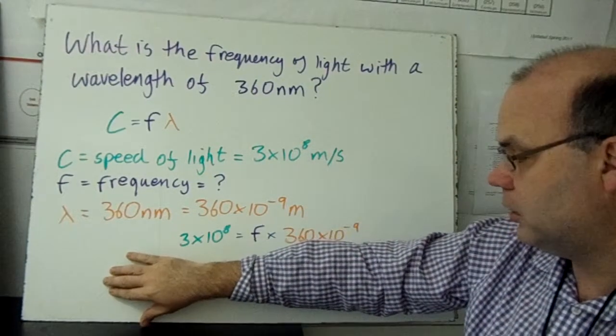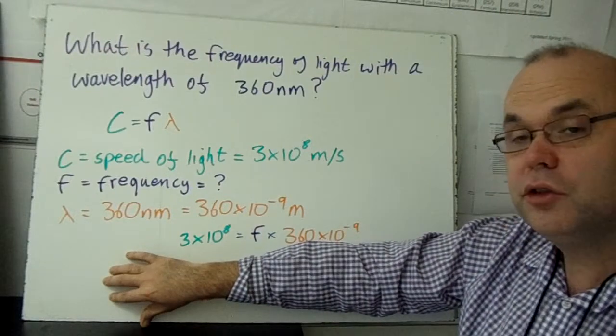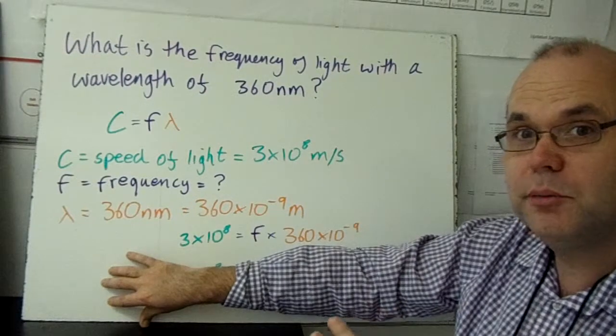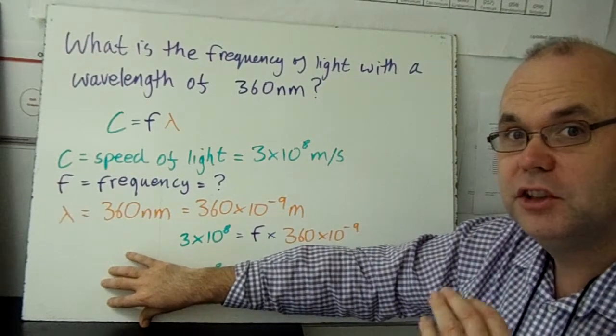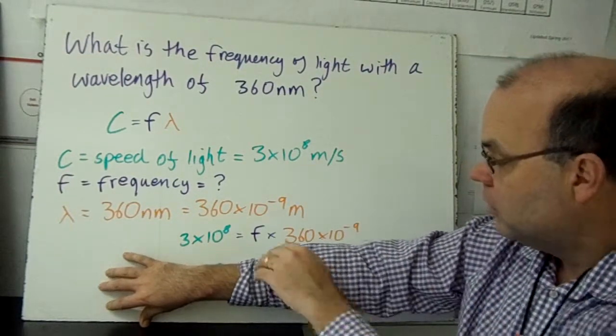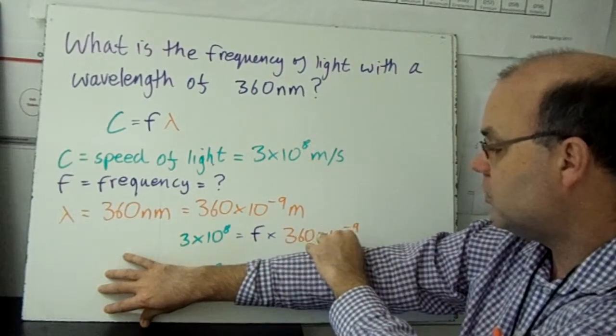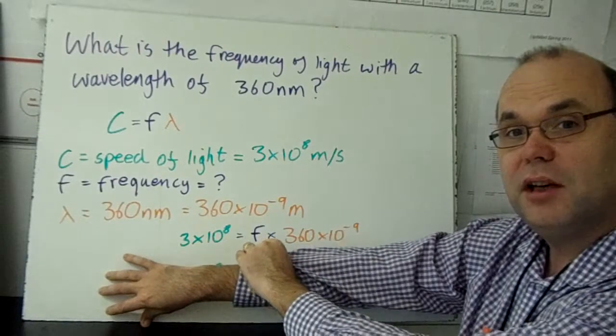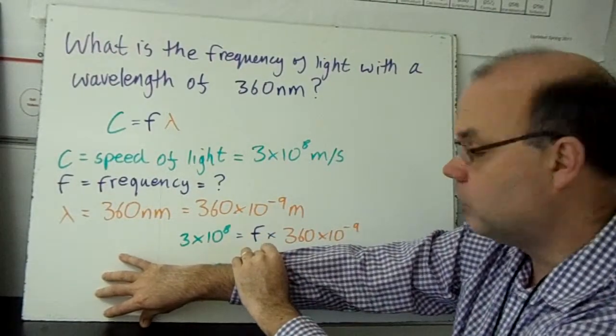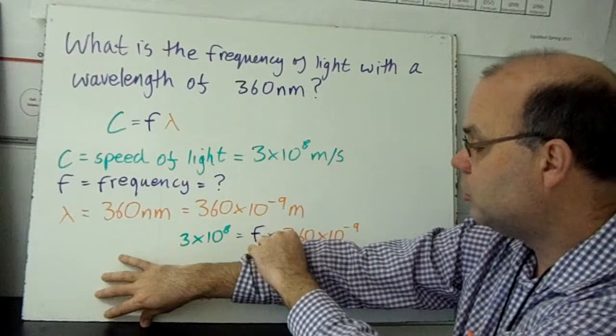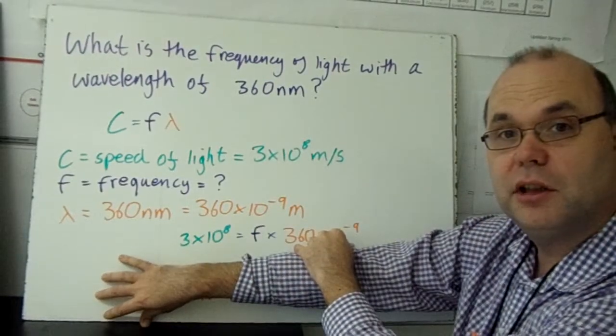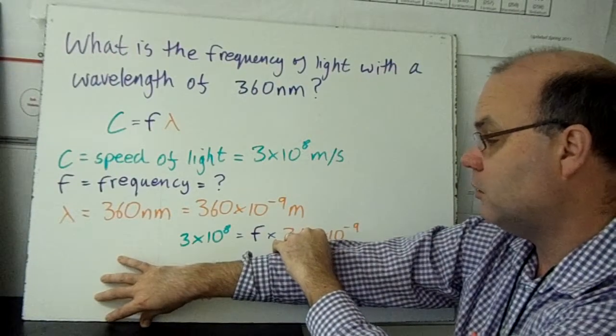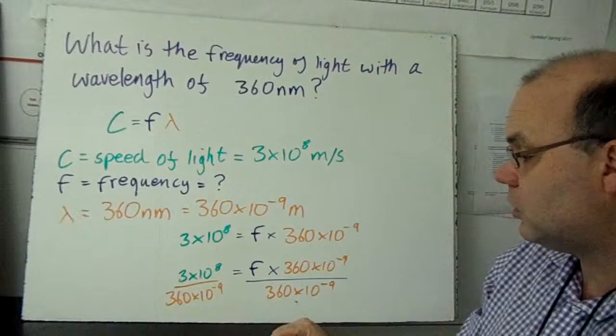We've got this far now, and now we've just got to do our basic algebra. Remember, chemistry math is simple math, it's just got scary numbers in it. We've got F times 360 times 10 to the minus 9. We want to get F by itself, so we've got to undo what was done to it. It was multiplied by 360 times 10 to the minus 9, so we're going to divide by 360 times 10 to the minus 9. And we do the same thing to both sides.